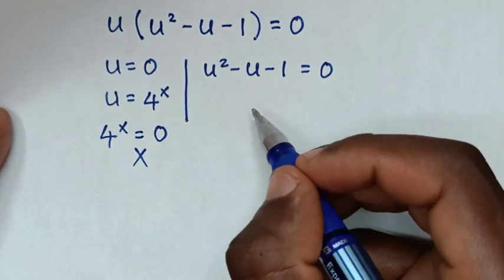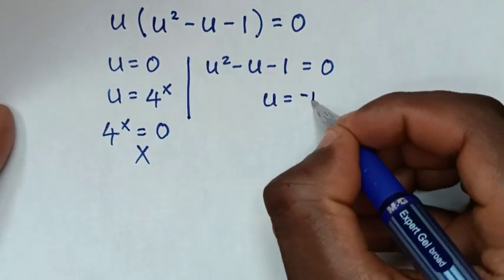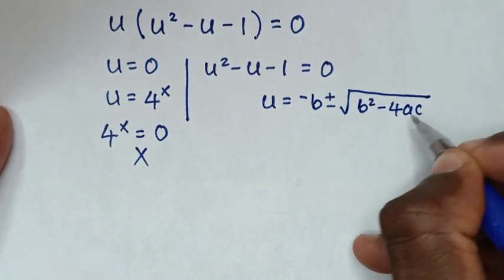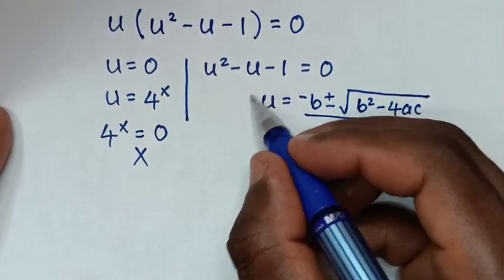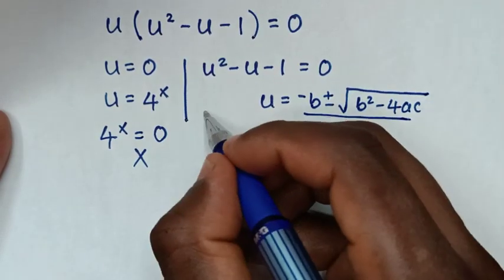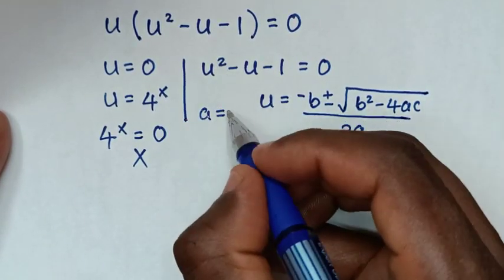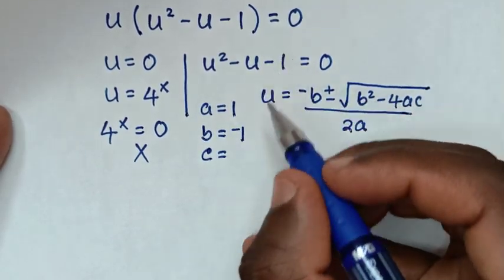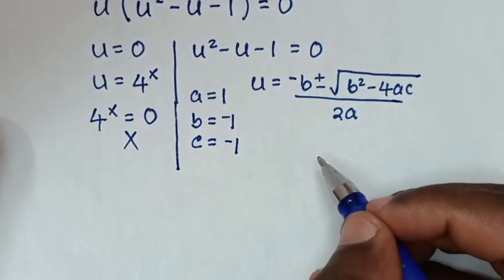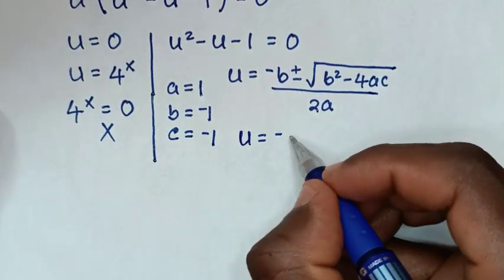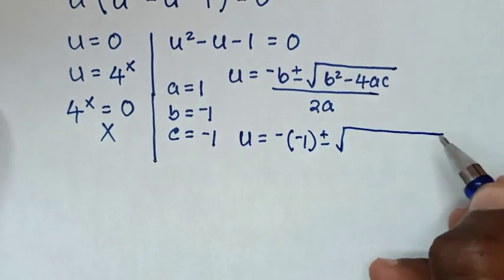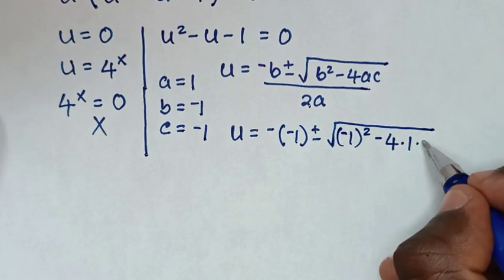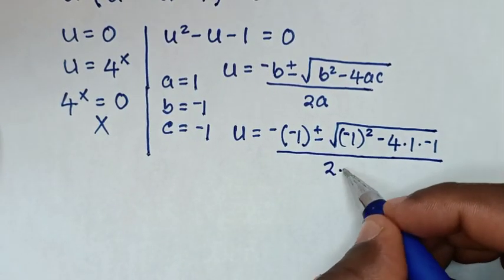We will continue to solve from the quadratic equation using the quadratic formula: u is equal to negative b plus or minus square root of b squared minus 4ac over 2a. Here a is equal to the coefficient of u squared, which is 1; b is equal to the coefficient of u, which is negative 1; and c is equal to the constant, which is negative 1.